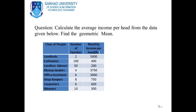Question: Calculate the average income per head from the following data — find the geometric mean. Classes of people: landlords (2 families, income 5,000), cultivators (100 families, income 400), landless laborers (50 families, income 200), money lenders (4 families, income 3,750), office assistants (6 families, income 3,000), shopkeepers (8 families, income 750), carpenters (6 families, income 600), weavers (10 families, income 300).